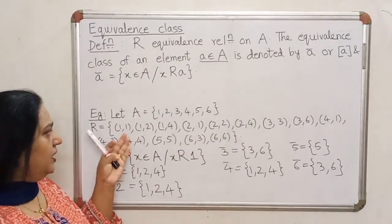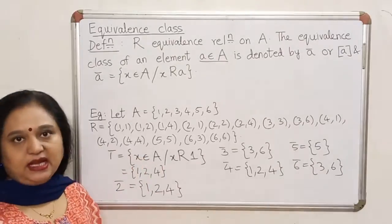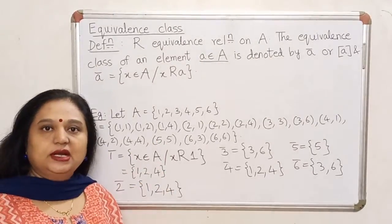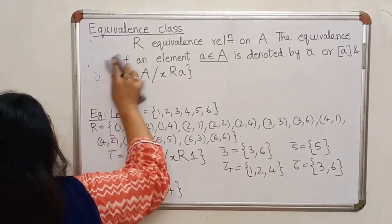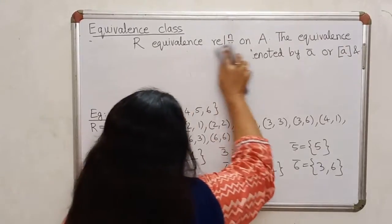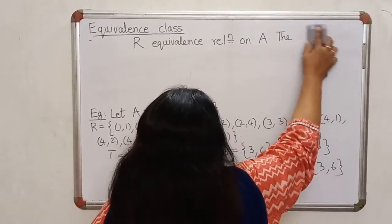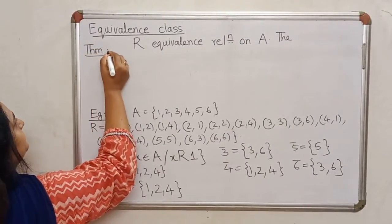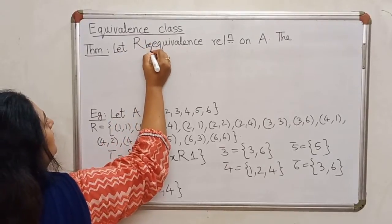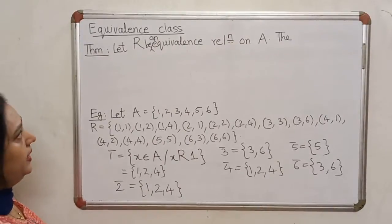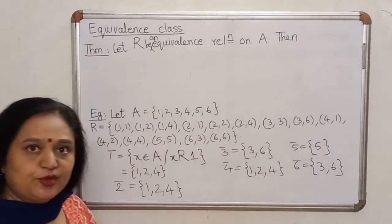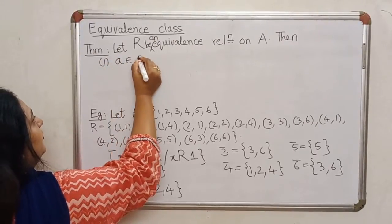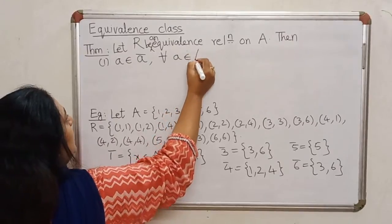This is how we find equivalence classes of elements of a set under a given relation. Naturally, if the relation changes, the elements in the equivalence classes will also change. We will now list certain important properties of equivalence classes — properties you will be using throughout. Let R be an equivalence relation on a set A. The first property worth noting is that every element belongs to its own equivalence class.